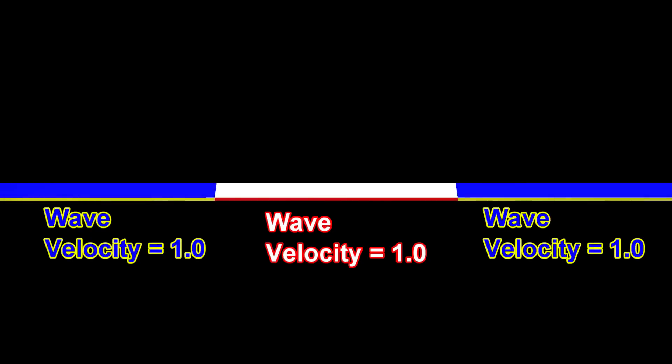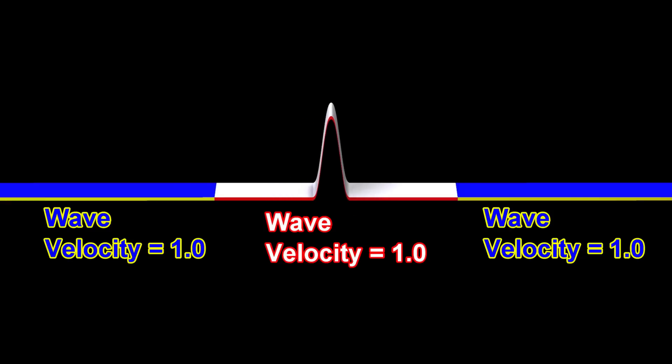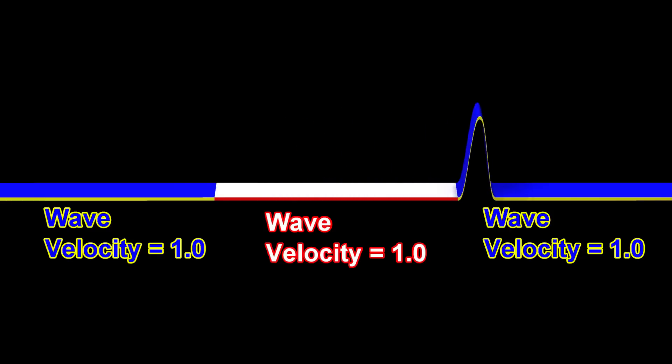If the two velocities are exactly equal, then the wave just passes straight through, as if the two materials are the exact same material.